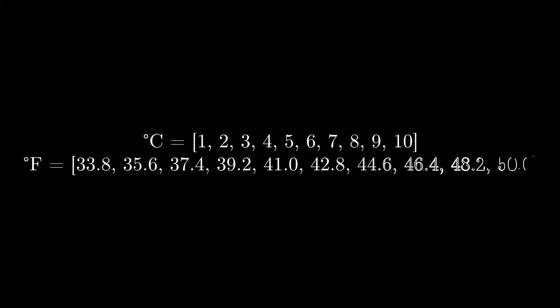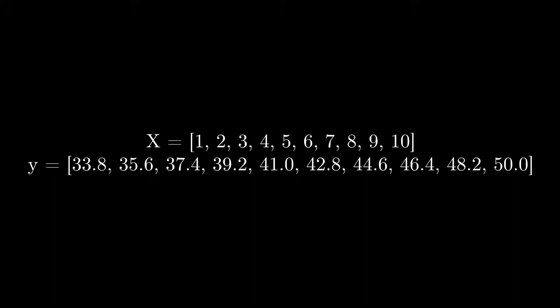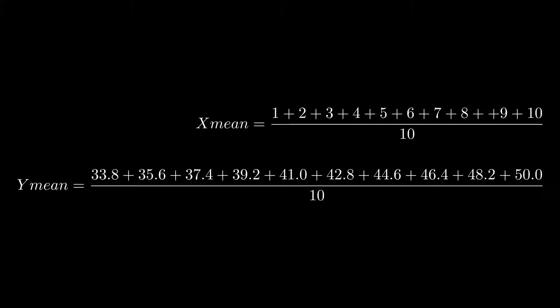But in machine learning we term the independent variable as x, in this case which is Celsius value, and y is the variable which is to be predicted when x value is given, in this case it is degree Fahrenheit. Let's change the variable.